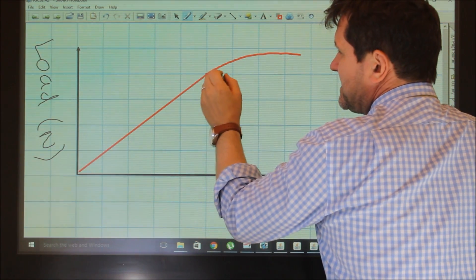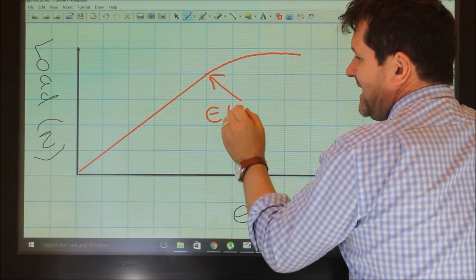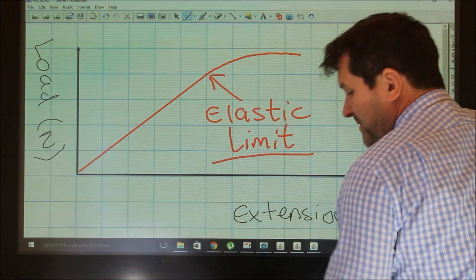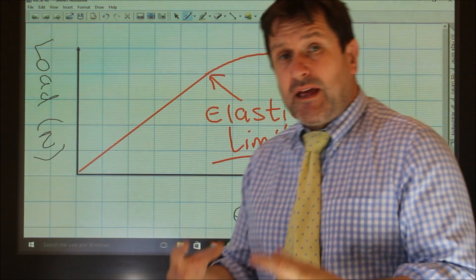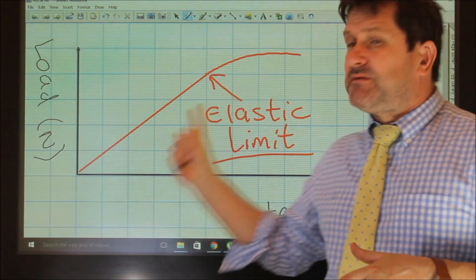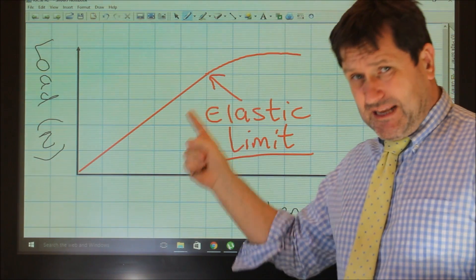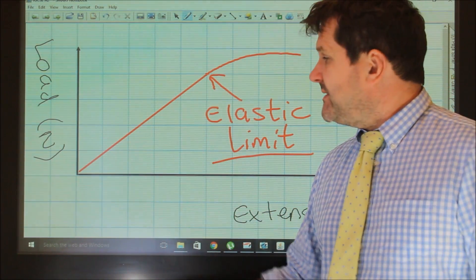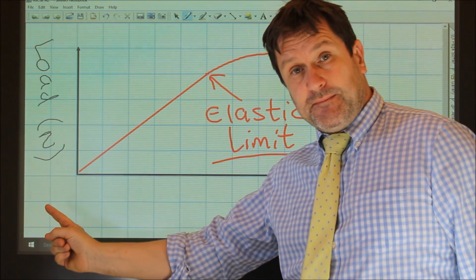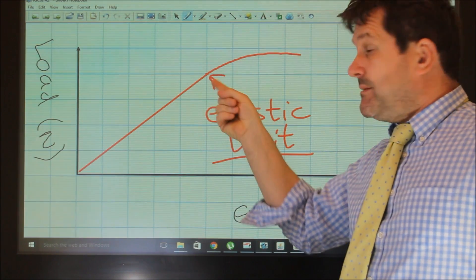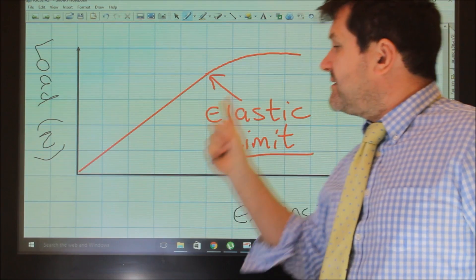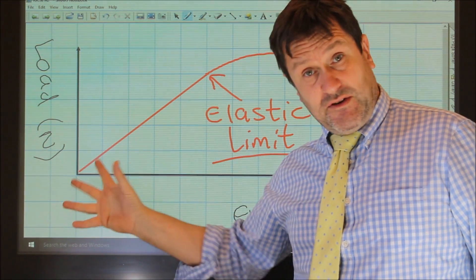So once you've gone past the elastic limit, this means that now the spring is permanently deformed and it will not return to its original length. Once you've gone past the elastic limit. But Hooke's law says force is proportional to extension, nice straight line, until you reach the elastic limit. If you go past the elastic limit, it's no longer proportional and it will no longer return to its original length.